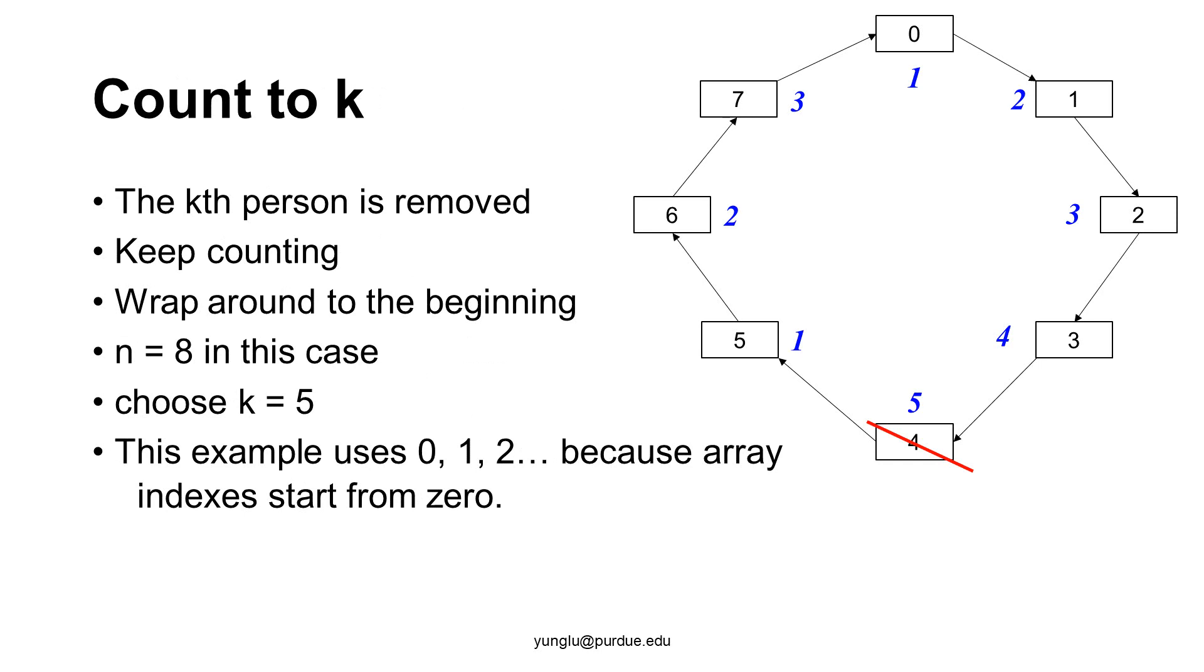We start from the person whose index is 0 and mark this person as 1. Then the second person is marked as 2, the next person is marked as 3. We continue this process until marking a person 5. This person's index is 4 and this person is removed from the game.